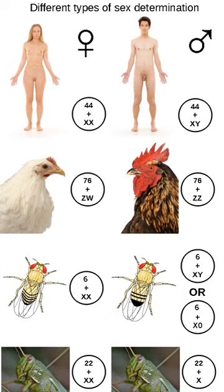There are other environmental sex determination systems including location-dependent determination systems as seen in the marine worm Bonellia viridis. Larvae become males if they make physical contact with a female, and females if they end up on the bare sea floor. This is triggered by the presence of a chemical produced by the females, bonnellin. Some species, such as some snails, practice sex change: adults start out male, then become female. In tropical clownfish, the dominant individual in a group becomes female while the other ones are male, and bluehead wrasses are the reverse.